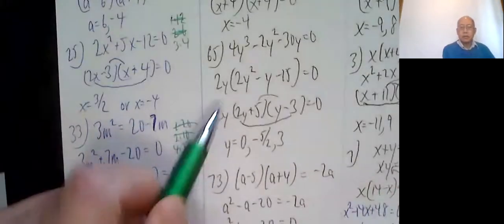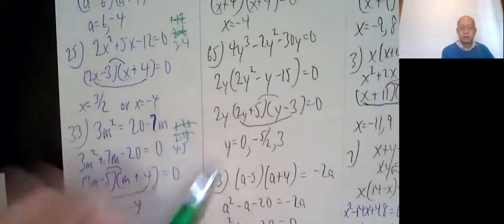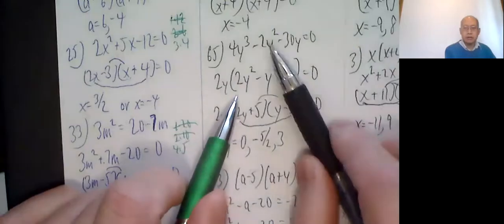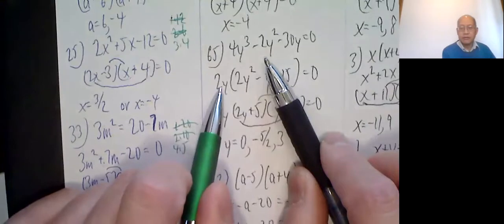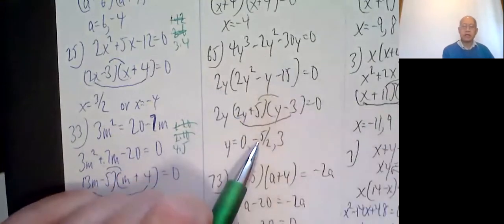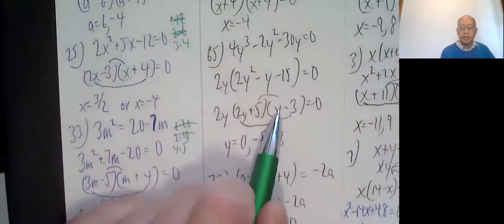What makes this 0? 0. What makes this 0? A little bit harder. 2y plus 5 equals 0, subtract 5, negative 5, divide by 2, negative 5 halves. And this one is 3.